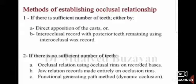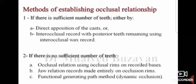دلوقتي عندي methods of establishing occlusal relationship. هقسمهم بناءً على number of remaining teeth. لو عندي sufficient number of teeth، هعمل occlusal relationship بطريقتين: إما direct opposition of the cast، أو inter-occlusal record with posterior teeth remaining، باستخدام inter-occlusal wax record.